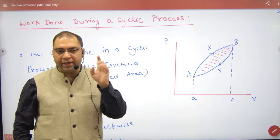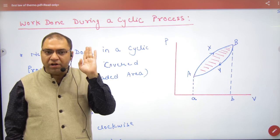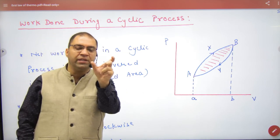This is what you say: In any cyclic process, net work done is the area inside the cycle.